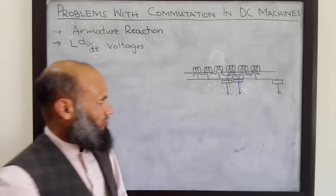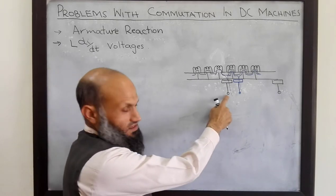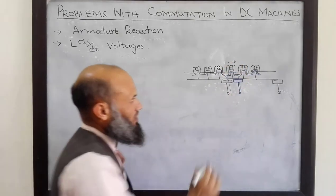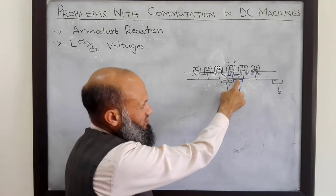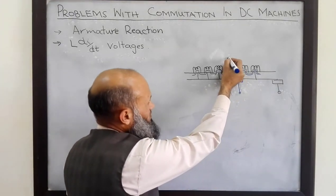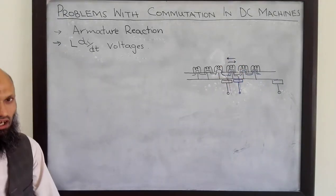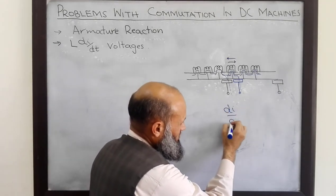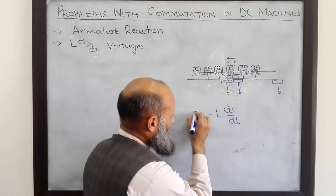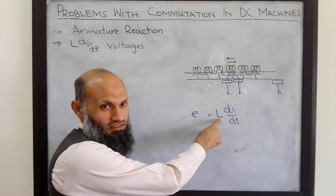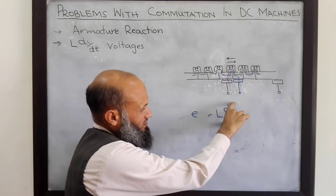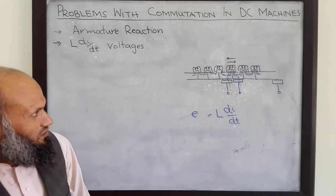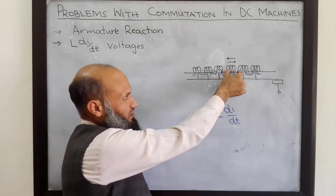Now carefully look at this coil. When the brush was in contact with this commutator segment, the direction of current in this coil was in one direction. And now, when the brush is in contact with this commutator segment, the direction of current in this coil has been reversed. We know that in an inductor, when there is a rate of change of current, there is a voltage across that inductor. And even if L is small, di/dt is quite large because the direction of current has quickly reversed, and therefore a high voltage will appear across this inductor.